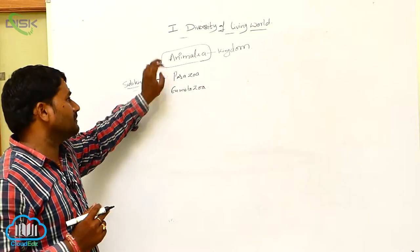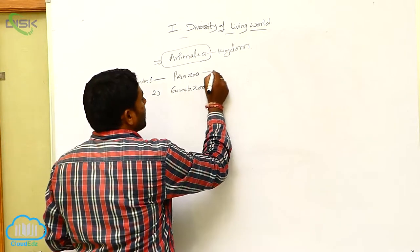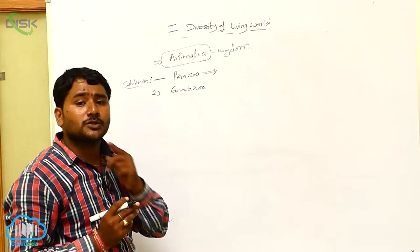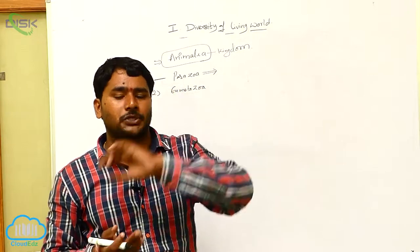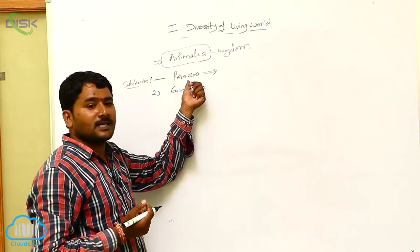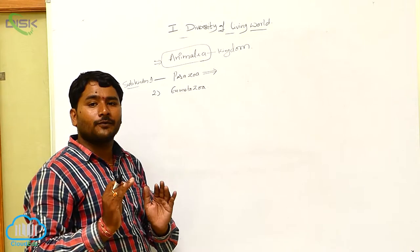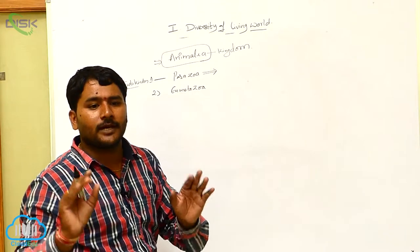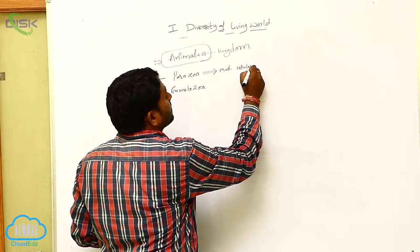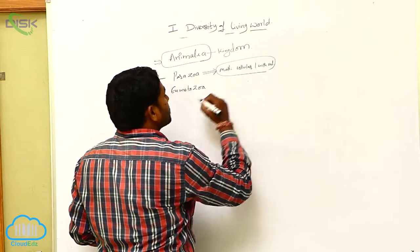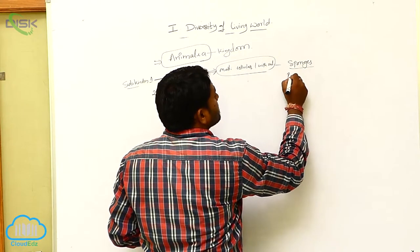Here generally Animalia Kingdom is divided into how many sub-kingdoms? Parazoa and Eumetazoa. Let us see what are Parazoans? Parazoans are multicellular organisms without formation of well-defined tissues. Parazoans are multicellular organisms. Their body is made up of number of cells but they don't have distinct or well-defined tissues. Here Parazoans are multicellular without well-defined tissues. Example, if you see sponges or what is the phylum of the sponges? Porifera.